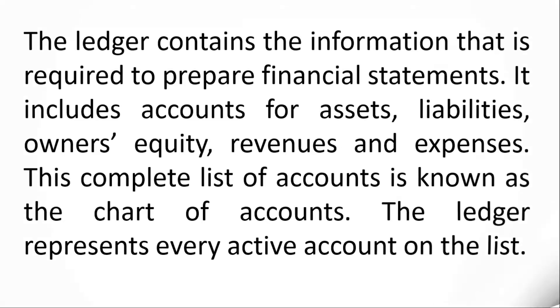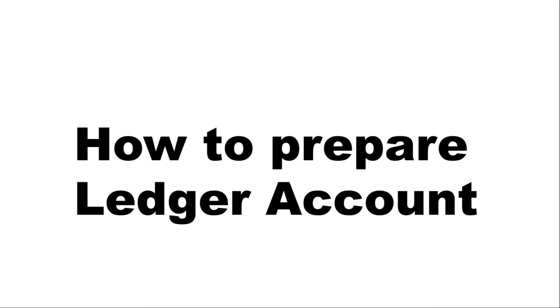This is how to prepare the ledger account. As you can see, the cash account is added to capital and the rent account is added to cash. One account is separated from another — that means cash account is posted to capital.